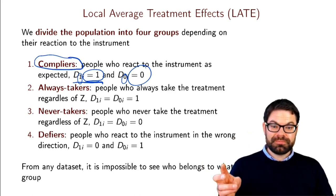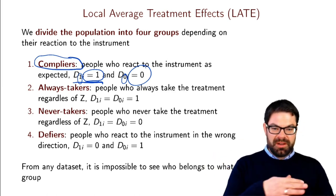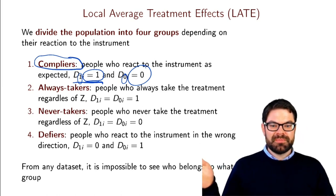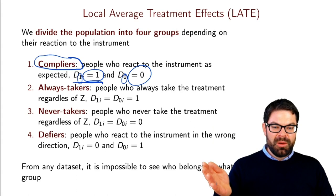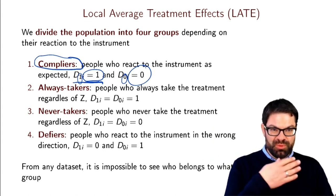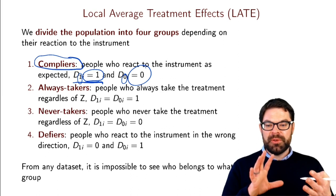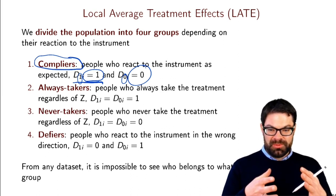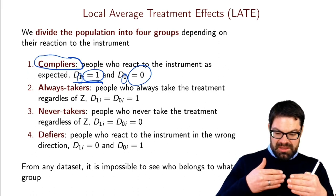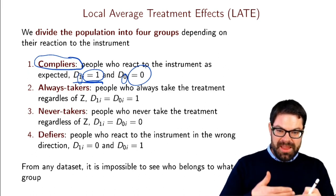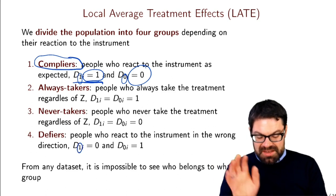Then there are two groups whose behavior is not affected by the instrument: always-takers, who always take the treatment regardless, and never-takers, who never take the treatment regardless. In the voucher example, always-takers would have moved anyway, and never-takers would never move no matter what the voucher allows. Then there is a fourth group — the defiers — who react in the opposite direction of what the instrument encourages.